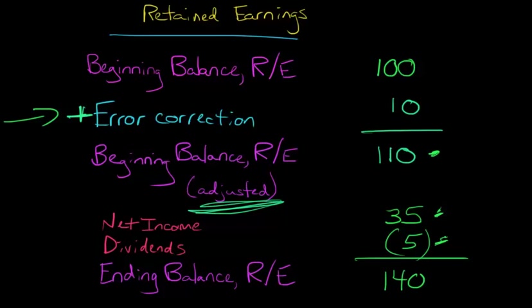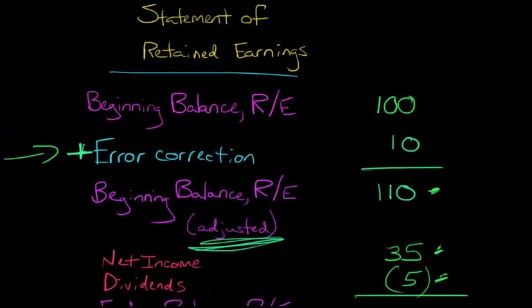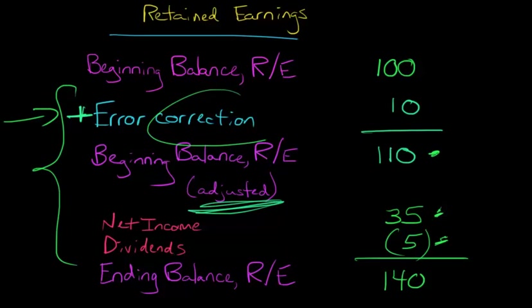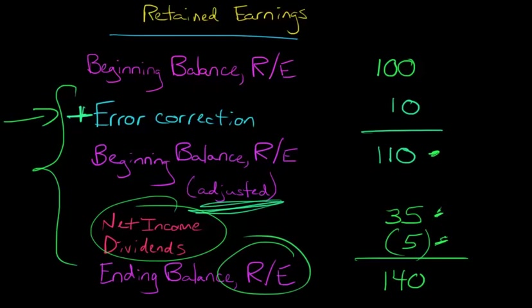Basically all we're doing with this statement of retained earnings is we're saying, where do we start with retained earnings? What happens during the period, or what kind of corrections do we have to make, and then what happens during the period in terms of our income, our loss, and our dividends? And then where do we end up, and then investors can just look and see how many dividends are being paid out, how this retained earnings balance was affected from the previous year until today.